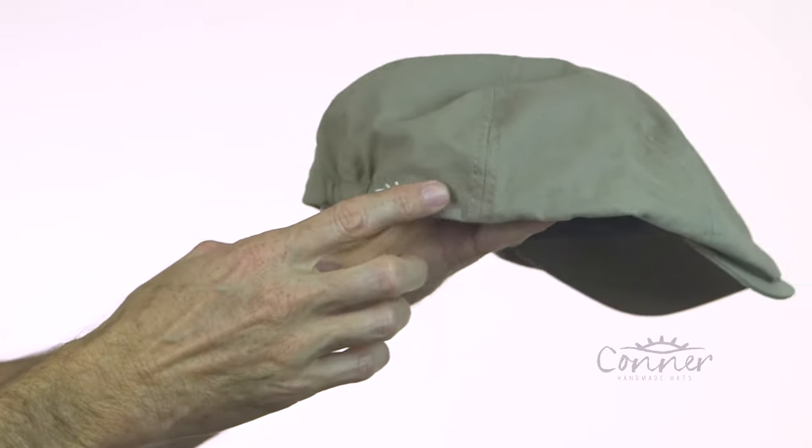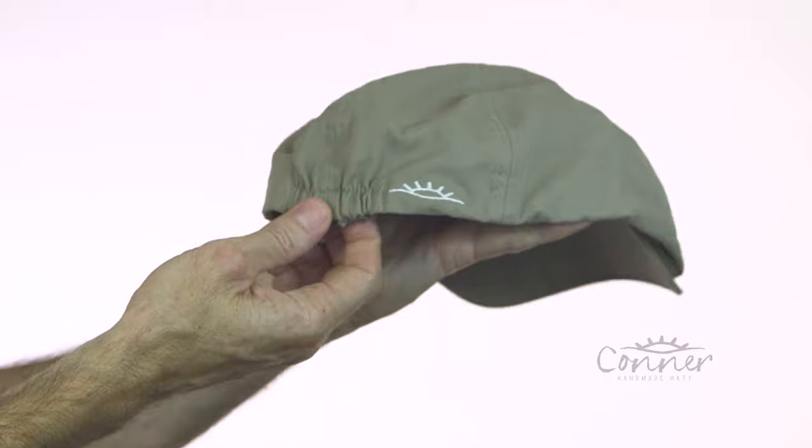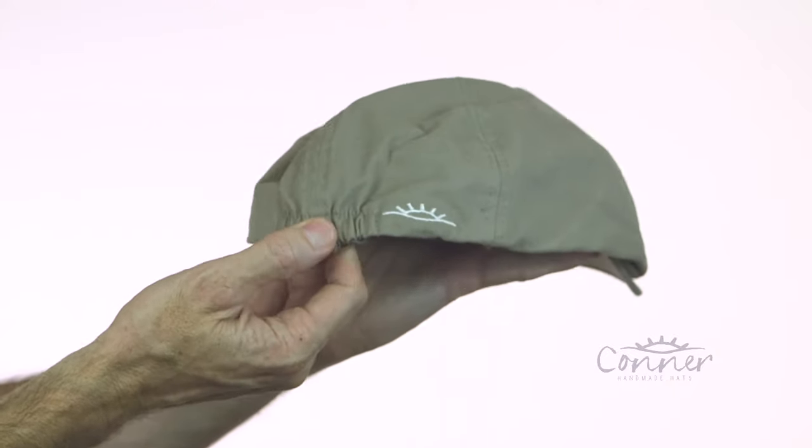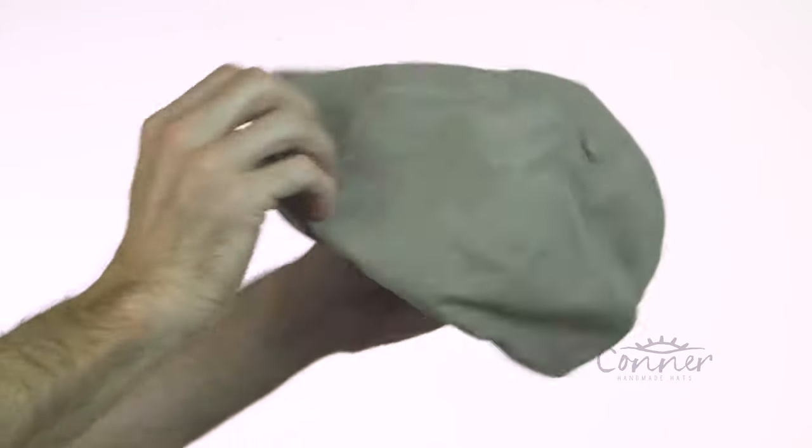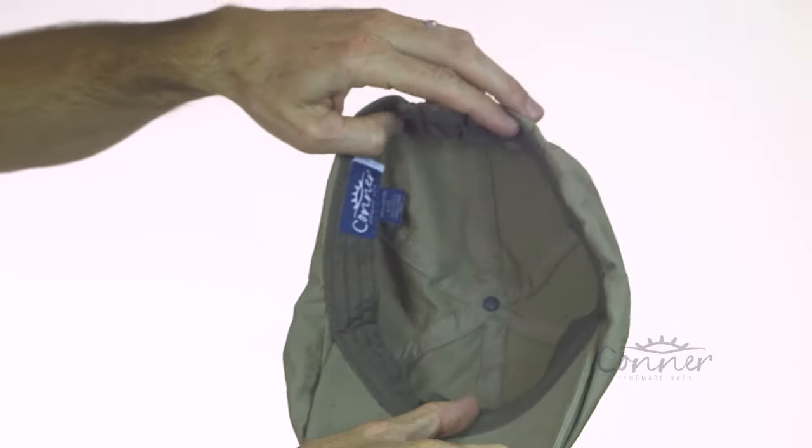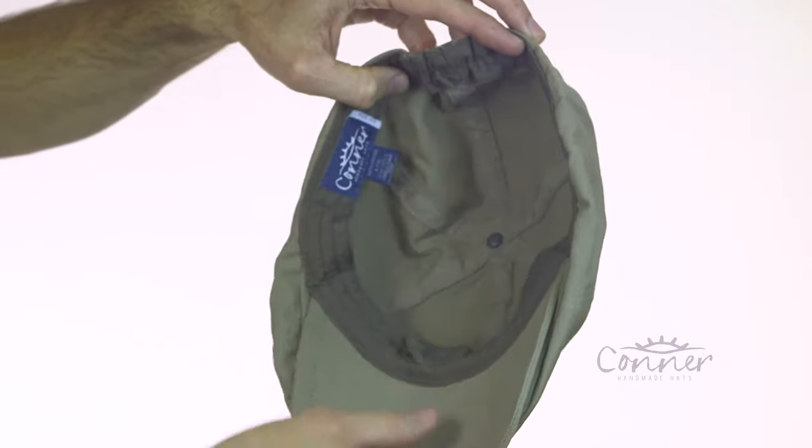Coming around the back here we've got our nice sun logo, an elastic back so it's kind of form fitting. On the inside an organic cotton sweatband, labels are made from recycled plastic bottles.